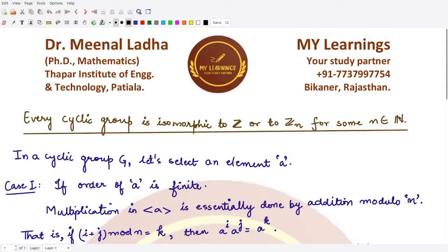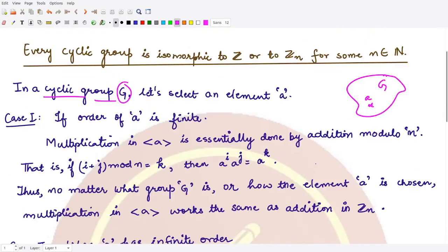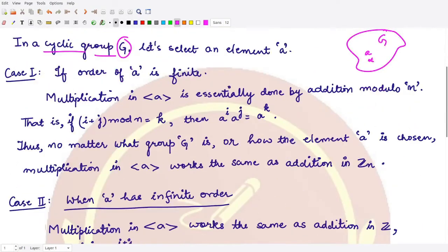Hello everyone, welcome to this video. We'll be discussing two cases for any cyclic group G. From the group G we may select one element a, and this element a could have either finite order or infinite order.